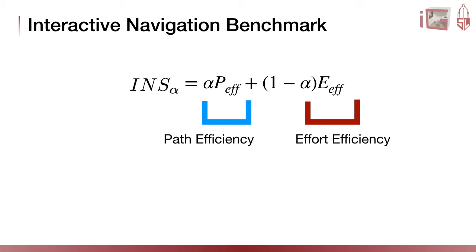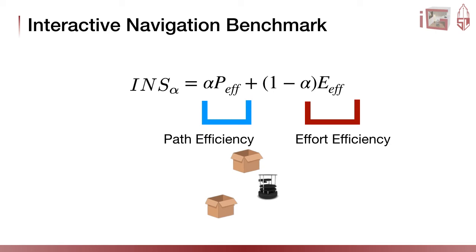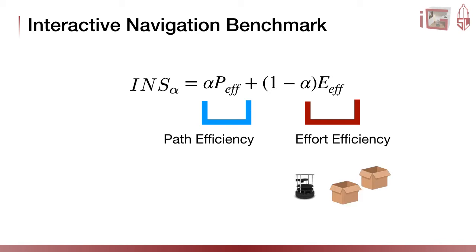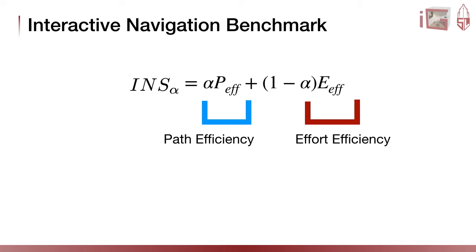To give an intuition of INS, let's imagine there is a scene with interactive obstacles on the shortest path for a robot. If the robot follows the shortest path, the path efficiency term would be 1 but the effort efficiency would be low, as the robot would invest effort colliding and moving objects. On the contrary, if the robot avoids all interactive objects, the effort efficiency will be 1 but the path efficiency will be low due to detours.